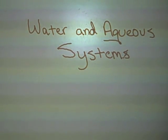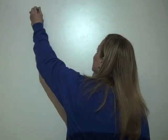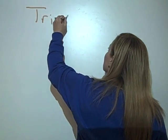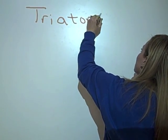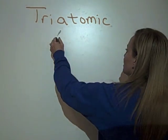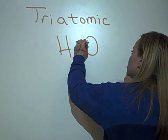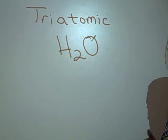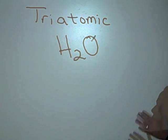The first thing we want to know is that water is what's called a triatomic molecule. Triatomic, tri meaning three, and of course atomic referring to atoms. Water is a triatomic molecule, and its water symbol is H2O. So you have two hydrogens and one oxygen, and that makes up your water molecule.